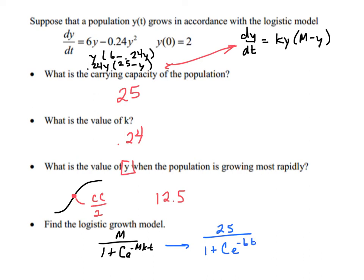We solve for the constant by plugging in 0 and setting it equal to 2. So 25 over (1 plus C) equals 2, meaning 1 plus C is 12.5, so C is 11.5. Our final equation is y equals 25 over (1 plus 11.5 e to the negative 6t).